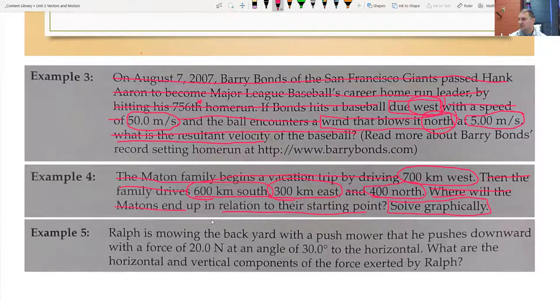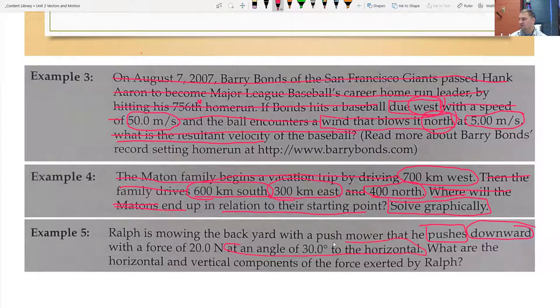Ralph is mowing the backyard with a push mower that he pushes downward at an angle of 30 degrees to the horizontal. So pushes is going to be a keyword, downward, at an angle of 30 degrees to the horizontal—that's all giving me direction, and the force is also part of that number. So all of that stuff, downward at an angle of 30 degrees to the horizontal, 20 newtons, those are all part of the number. What's the question? What are the horizontal and vertical components of the force exerted by Ralph?